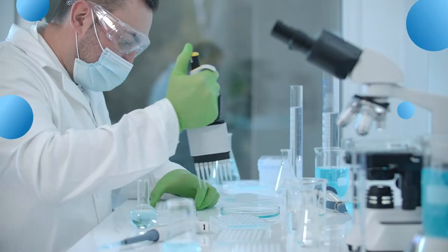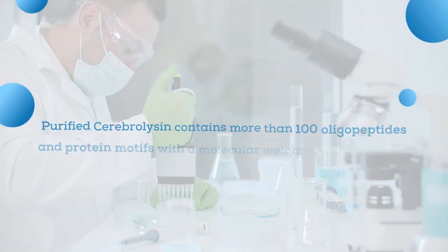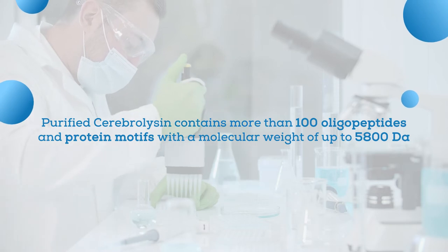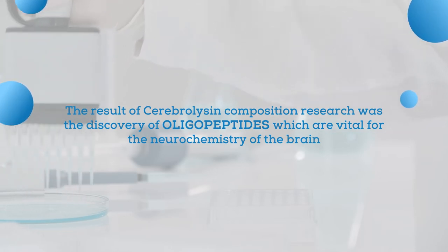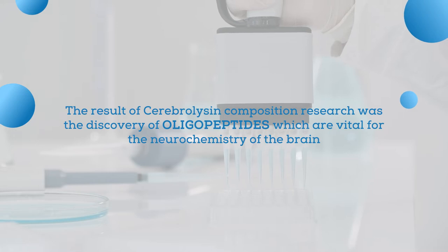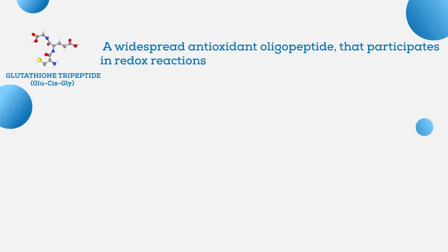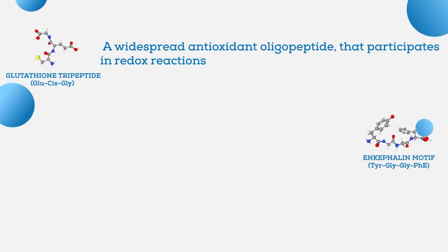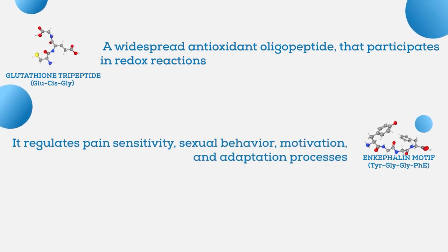The exact composition of Cerebrolysin is still not fully known. Studies have shown that purified Cerebrolysin contains more than 100 oligopeptides and protein motifs with a molecular weight of up to 5,800 Da. Research led to the discovery of several oligopeptides vital for the neurochemistry of the brain: glutathione tripeptide, a widespread antioxidant that participates in redox reactions; and the enkephalin motif, which regulates pain sensitivity, sexual behavior, motivation, and adaptation processes.